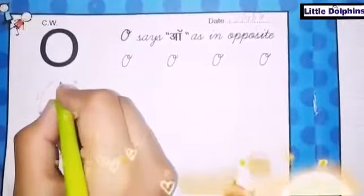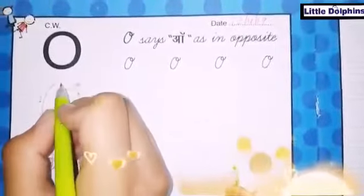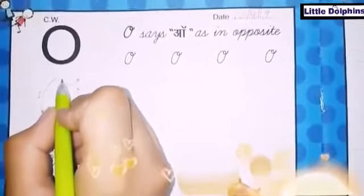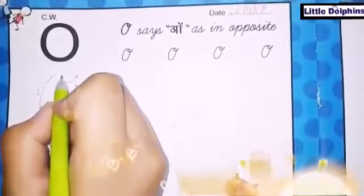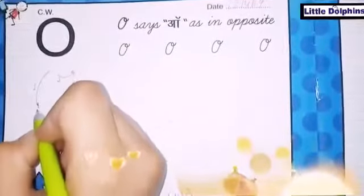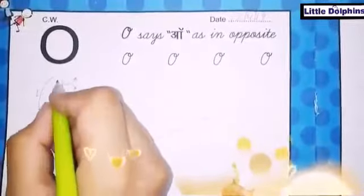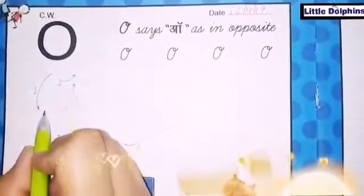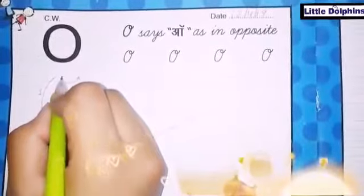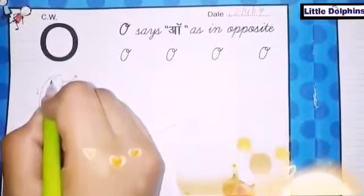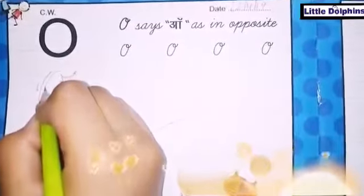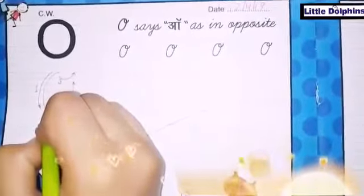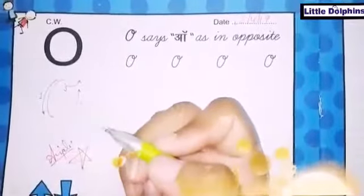We will start from the top line, the red line. Following the direction of our first arrow, we will move downwards to our third line, making a curved line, and finish at the third line.